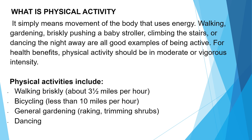What is physical activity? It simply means movement of the body that uses energy. Walking, gardening, brisk walking, pushing a baby stroller, climbing the stairs, or dancing are all good examples of being active. For health benefits, physical activity should be moderate or vigorous intensity. Physical activities include walking briskly at about 3 to 4.5 miles per hour, bicycling less than 10 miles per hour, general gardening, and dancing.